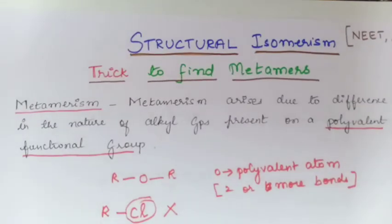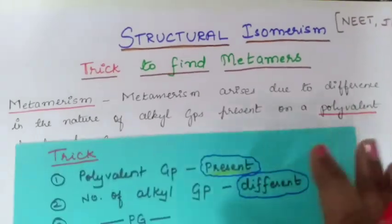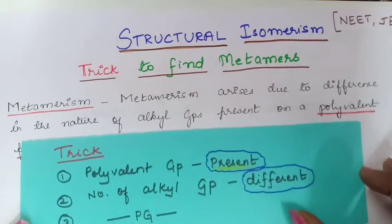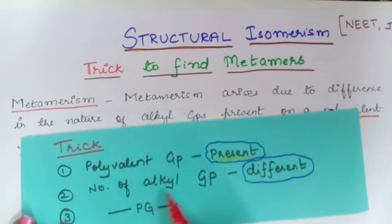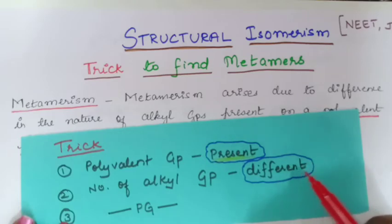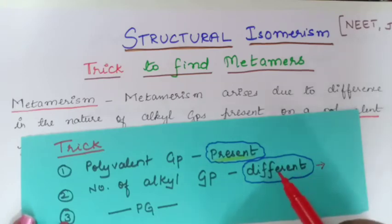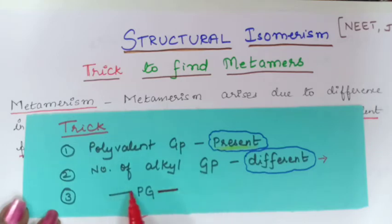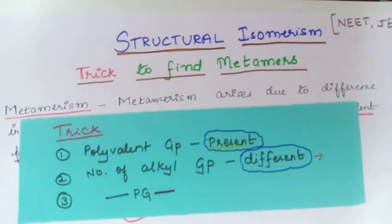Now I will tell you the trick to identify whether a molecule is a metamer or not. Step one: find whether a polyvalent group is present in the molecule. If it is present, step two: check the number of alkyl groups on both sides of the polyvalent group. If they are different, you can already say they are metamers. If they are the same, only then go to step three: check which atom each bond of the polyvalent group is attached to. Using this trick, in one minute we can identify whether a given molecule is a metamer or not.